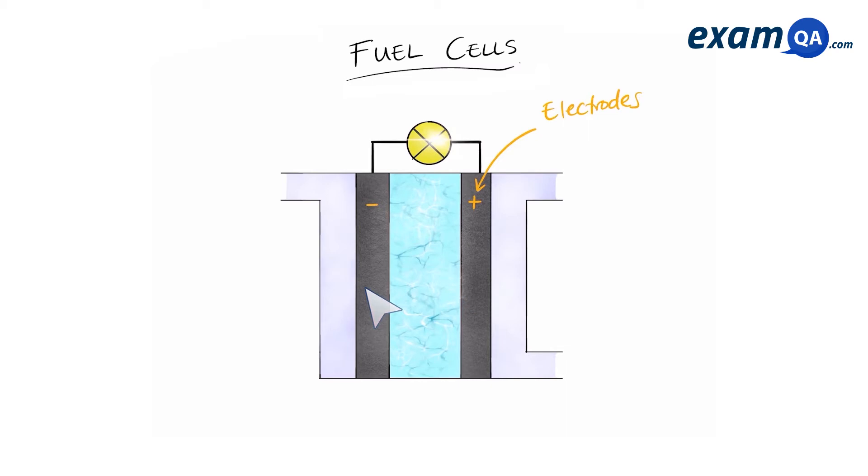However, unlike electrolysis, the names are flipped. So in electrolysis, the positive electrode was called the anode. However, in fuel cells, the positive electrode is actually called the cathode. So make sure you remember that they're flipped. The reason behind that is a bit more technical than GCSE, so we'll leave that out for another video.